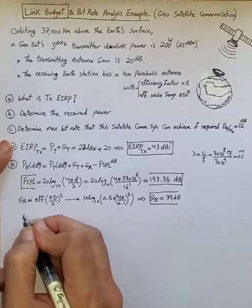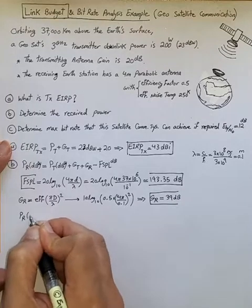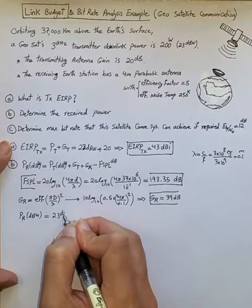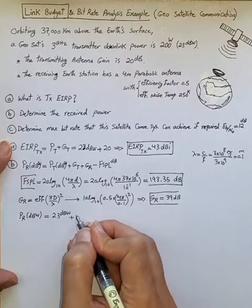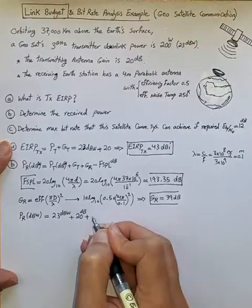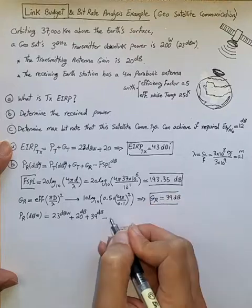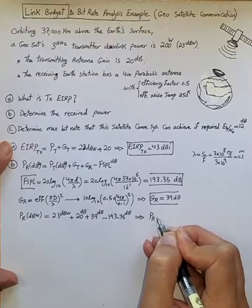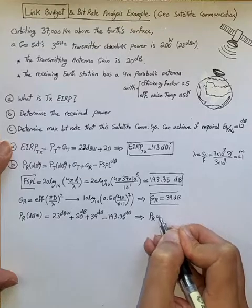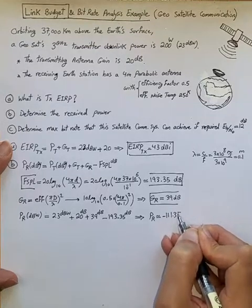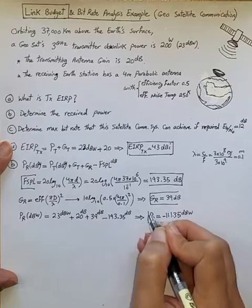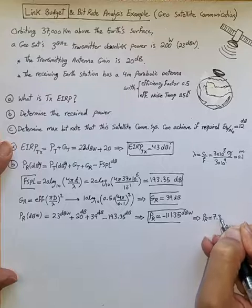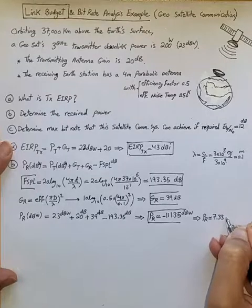With this information, we can compute the received power on the ground. It is 23 dBW transmit power, plus 20 dB transmitter gain, plus 39 dB receiver gain, minus 193.35 dB free space path loss. The received power is roughly −135 dBW, which translates in the linear domain to approximately 7.33 picowatts, or 10^-12 Watts.